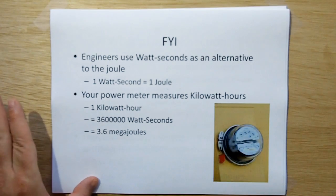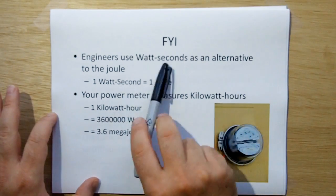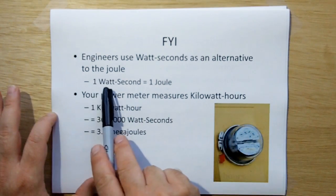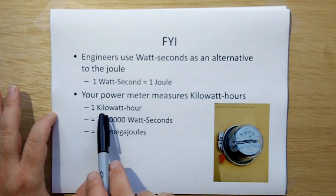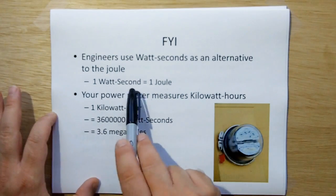And just for your information, engineers use watt seconds as an alternative to the joule, where one watt second is the joule. And that also has an equivalent called the kilowatt hour, which is watts in time.